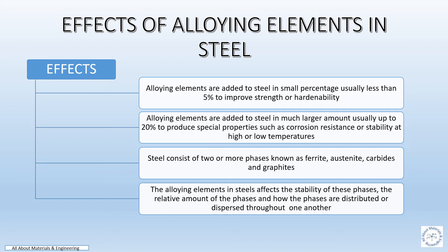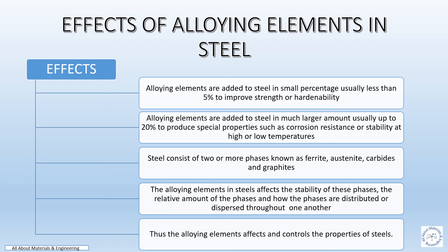The relative amount of the phases and how the phases are distributed or dispersed throughout one another are also affected. Thus, the alloying elements affect and control the properties of steel.